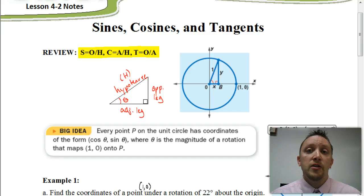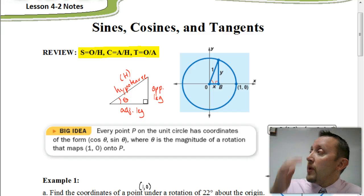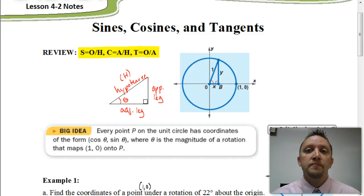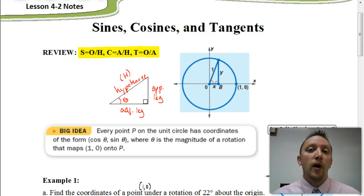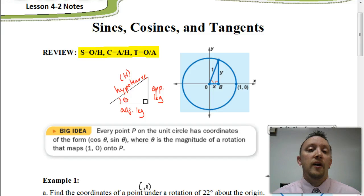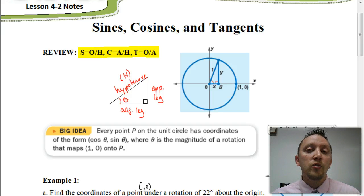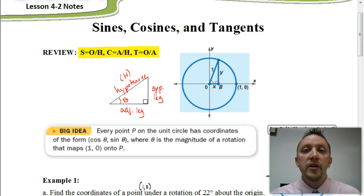Now, how does that relate to the unit circle? Here we have a unit circle, and every point on that unit circle has a coordinate — an x and a y. Those coordinates, x and y, relate to the sine and the cosine of our angles. Let's look more closely at this unit circle and see how we could use the sine and the cosine to figure out what the coordinate of any point on that unit circle would be.